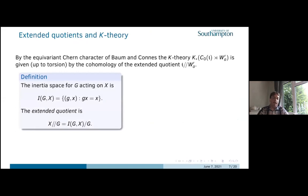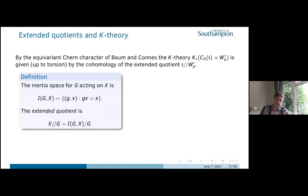If you want to compute these K-theory groups, you can work out the algebra by hand, or more generally you can apply the equivariant Chern character of Baum-Connes. This says that the K-theory of the crossed product — equivariant over the finite Weyl group — can be worked out by looking at what's called the extended quotient.